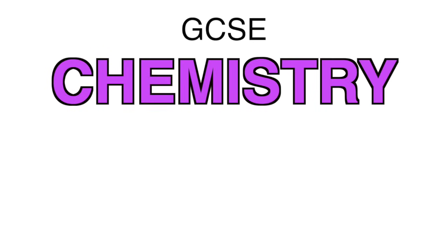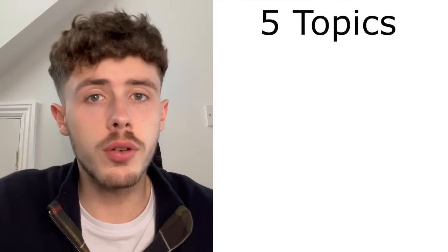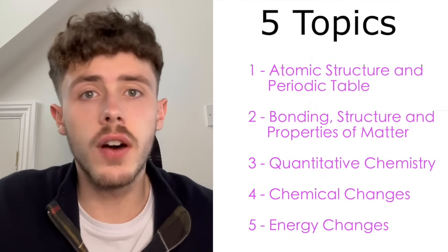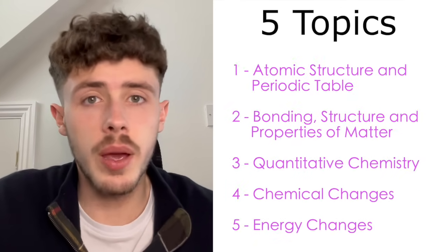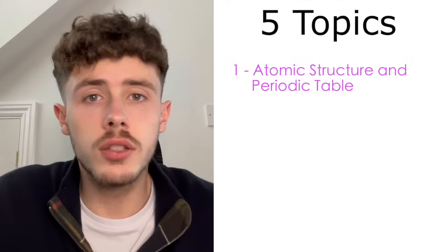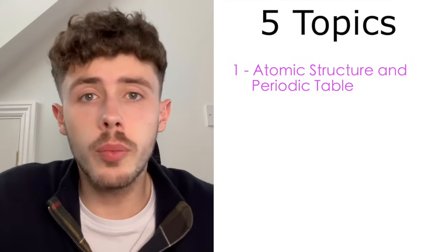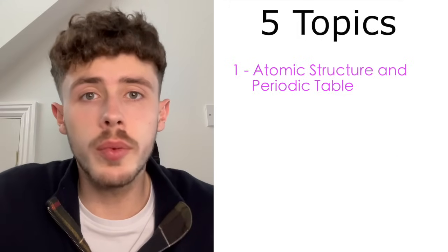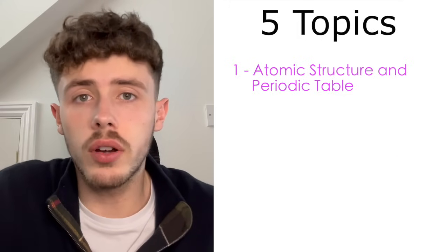This is GCSE Chemistry Paper 1 in 5 minutes. Both combined and triple science have 5 topics for Paper 1 Chemistry. So straight away, topic number 1: atomic structure and the periodic table.